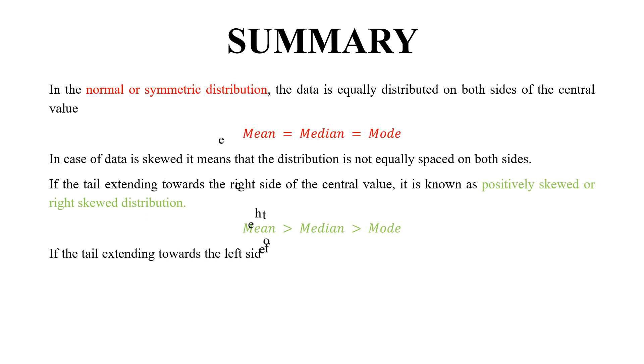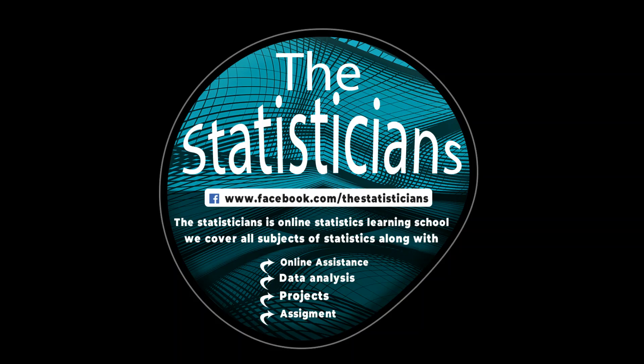If the tail extending towards the left side of the central value, it is known as negatively skewed or left skewed distribution. In this case, mean is less than median and median is less than mode.